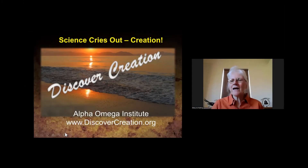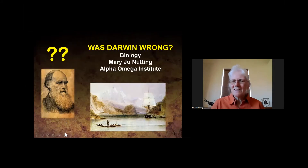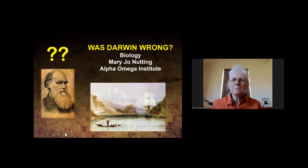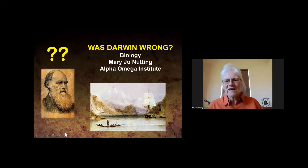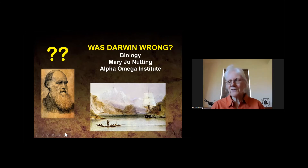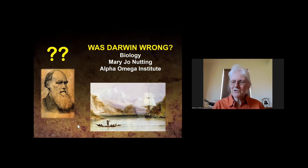Yesterday Dave talked about evidence from design, and today we're going to look more specifically at evidence from biology. We'll look at some of the evidences that Darwin put forth, or that his followers since then have been advancing as evidence of evolution, and we're going to show how the creation model as depicted in Genesis has a good alternative view that we believe fits the facts even better than the evolutionary one.